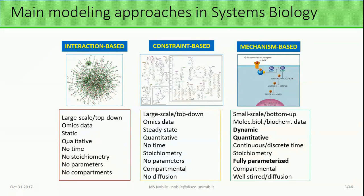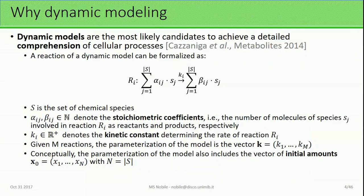Then we have mechanism-based models, which are much smaller than the previous models I described, but contain very detailed biochemical and molecular information. So we can go fully dynamic — we can perform simulations that are fully quantitative. The problem is that in order to build such models we need a full parameterization of the system. This is why we want to use dynamic modeling: because they allow us to achieve a detailed comprehension of cellular processes. One example of this kind of approach is reaction-based modeling.